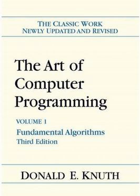Volume 2, Seminumerical Algorithms, second edition, 1981, xiii + 688 pp. ISBN 0-201-03822-6. The Art of Computer Programming, Volumes 1–3 Boxed Set, second edition, Reading, Massachusetts, Addison-Wesley, 1998. ISBN 978-0-201-48541-7. Volume 4's Fascicles 0–4 were revised and published as Volume 4A.